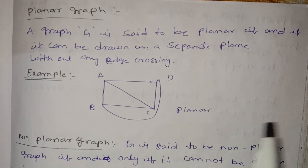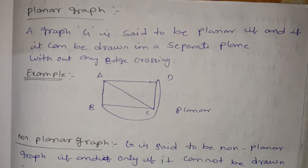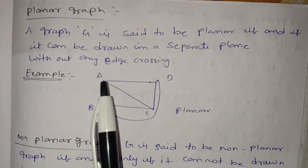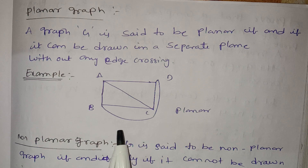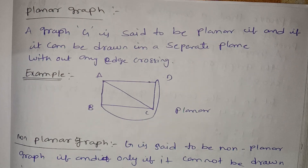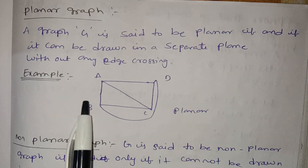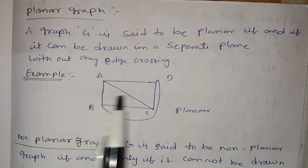Here we are going to see an edge — we will cross the edge — as a planar graph, we will draw in a separate plane. Now let's see the graph. A is one vertex, B is one vertex, C is one vertex, and D is one vertex. Total, to see the edges there are 4. We will draw in a separate plane: 1, 2, 3, 4, 5, 6. Now let's see the edges — this is not crossing the plane.